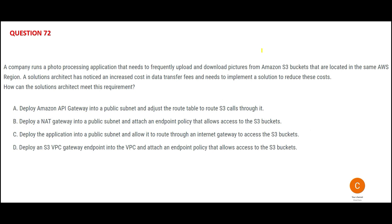There is a photo processing application where you can upload and download pictures — just like Pixel and similar applications. Suddenly you are seeing that your data transfer costs are very high and your fees are increasing, and you want to reduce the cost. This means there is some problem with how your applications are positioned in the network. Whenever it is a network-related setup, I will give you a thumb rule.